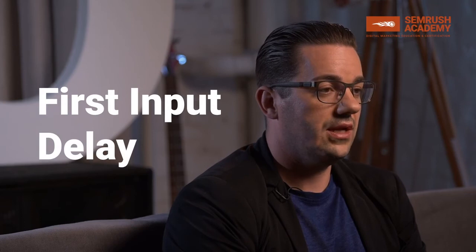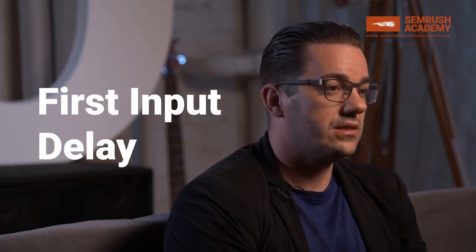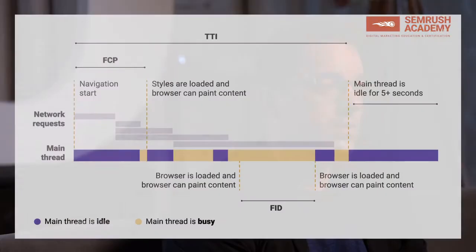Recently, Google introduced a new metric called First Input Delay, or FID, which measures the time from when a user first interacts with your site — for example, when they click on a link, tap on a button, or use a custom JavaScript-powered control — to the time when the browser is actually able to respond to that interaction. We are moving towards measuring things that affect the real-world behavior of how users interact with your site. Tracking for the first input delay is the same as with your paint timings: you use Google Analytics and extend the snippet accordingly so that the JavaScript is able to record all these timings.